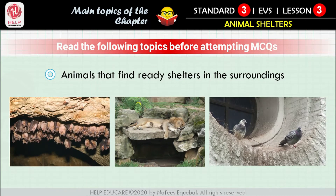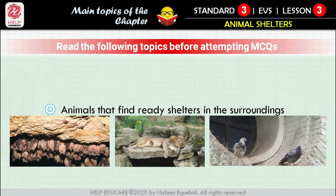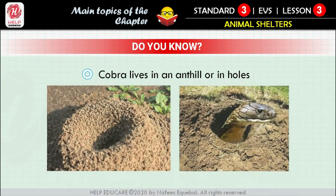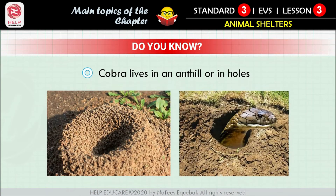Some animals do not make any efforts to build a shelter; they simply look around for a safe place — for example, pigeons, tigers, leopards, hyenas, and bats. It is believed that a cobra lives in an anthill, but that is not true. Anthills are built by ants, not by cobras. Cobras live in holes.